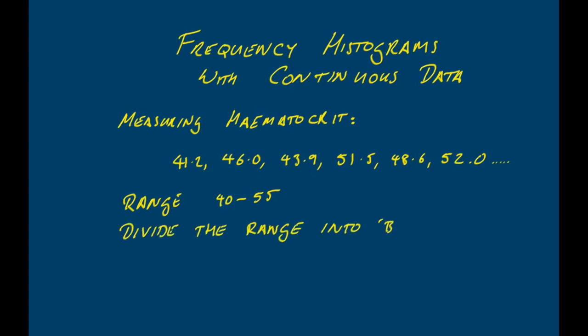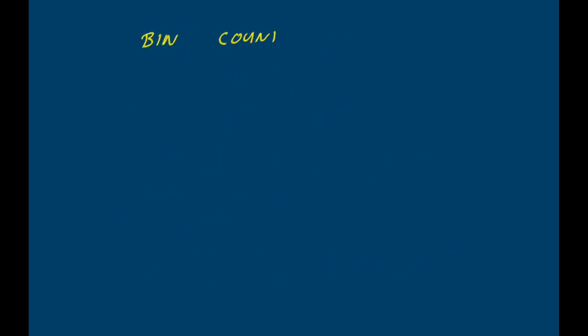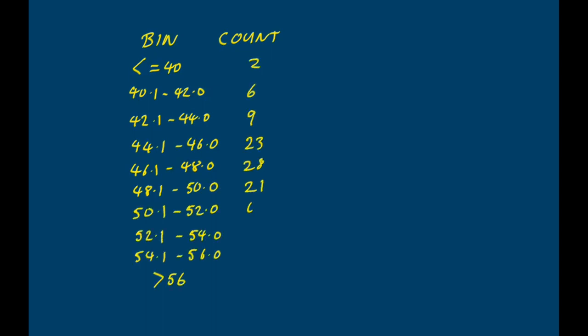These sub-ranges are called bins. In this case we might use bins like less than or equal to 40, 40.1 to 42, 42.1 to 44, and so on all the way to 54.1 to 56, and then more than 56. We count the number of data points that fall into each bin. Here's what we get: all the bin values are listed down the left-hand side going from less than or equal to 40 to more than 56, and then we have the actual counts of data points corresponding to each of those ranges.